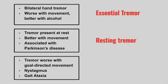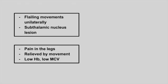Next is a tremor that's worse with goal-directed movements. The patient has nystagmus and gait ataxia. This is a cerebellar tremor. Next is a patient who presents with flailing hand movements unilaterally. There is a subthalamic nucleus lesion. This is hemiballismus.